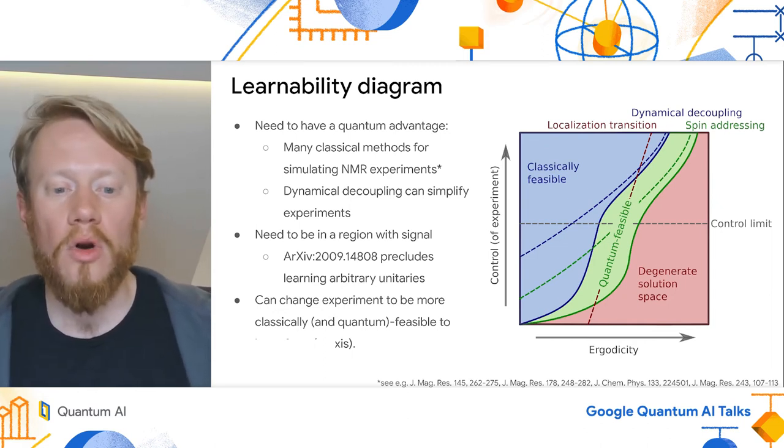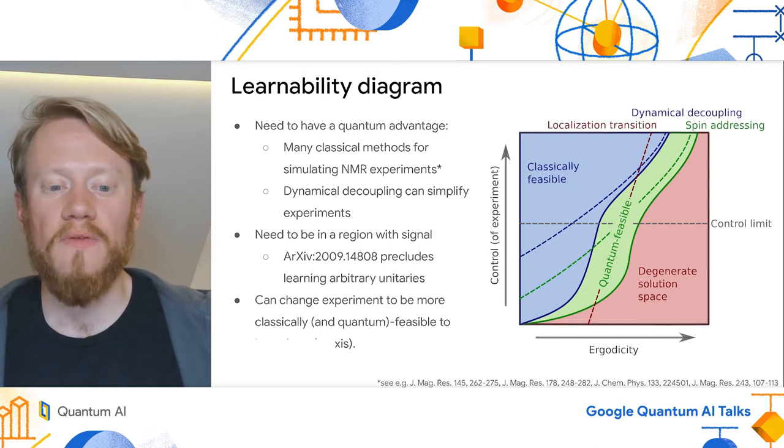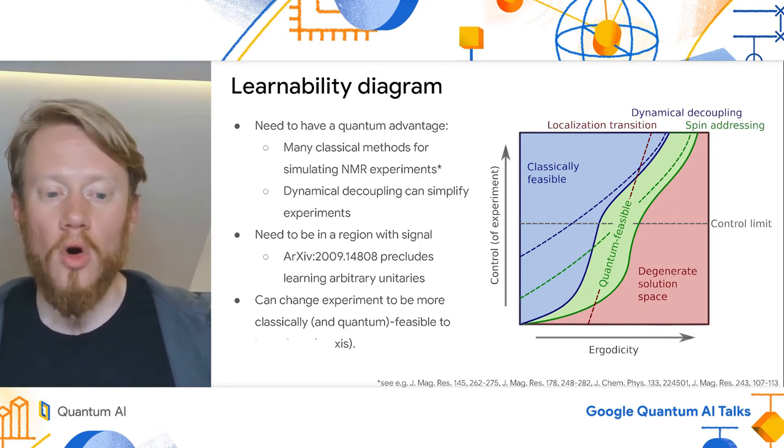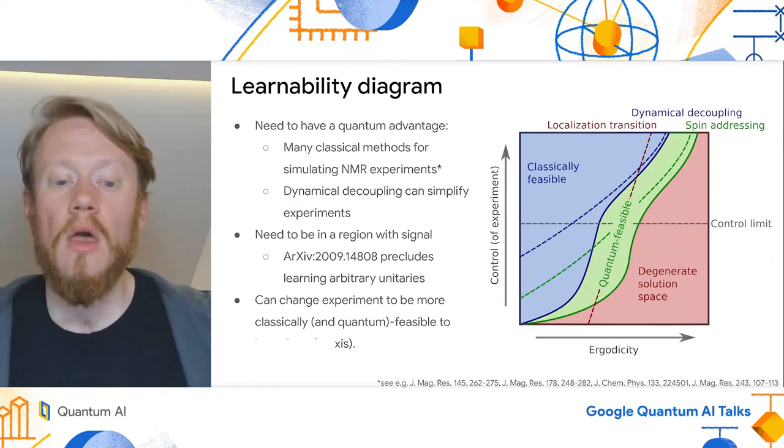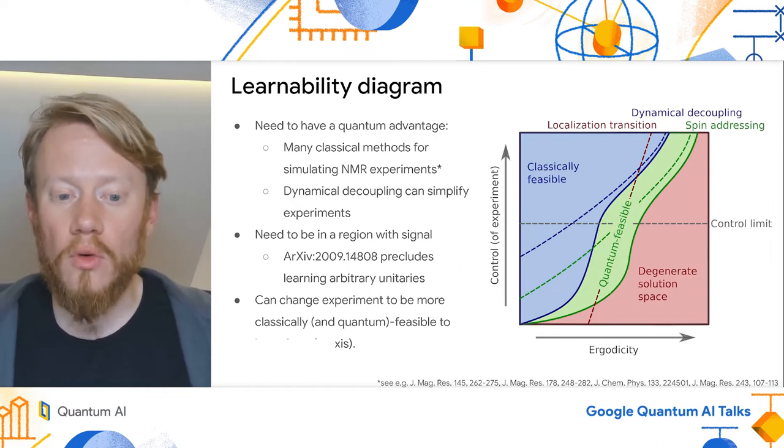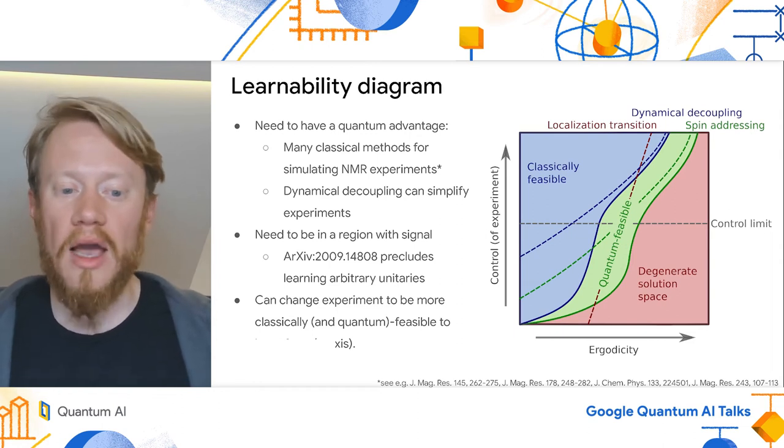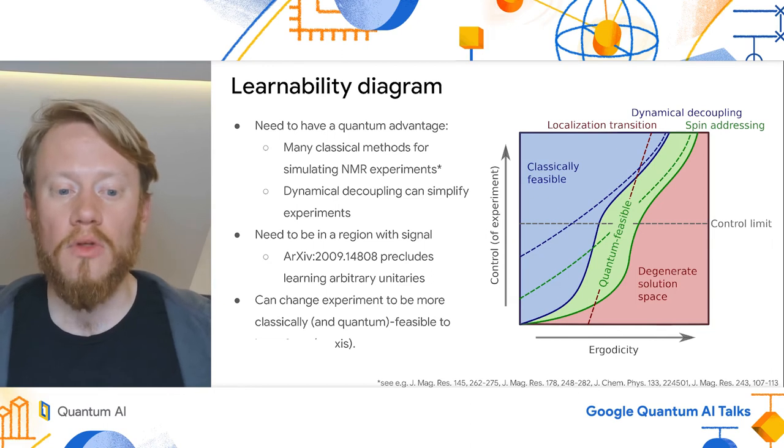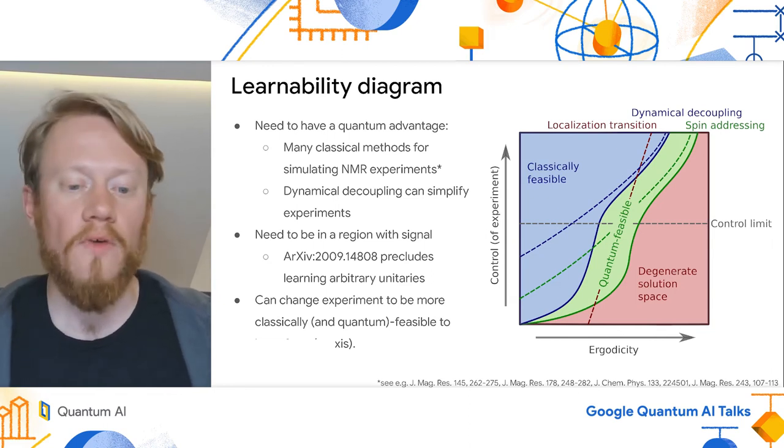Now, one might wonder what hope we have for finding a useful quantum advantage in quantum-assisted Hamiltonian learning for NMR. What gives me hope here is a large parameter space, but also the fact that greater control allows for both new quantum and new classical experiments, i.e., pushing the grey line up simply pushes its intersection with the green region to the right and doesn't remove it completely.